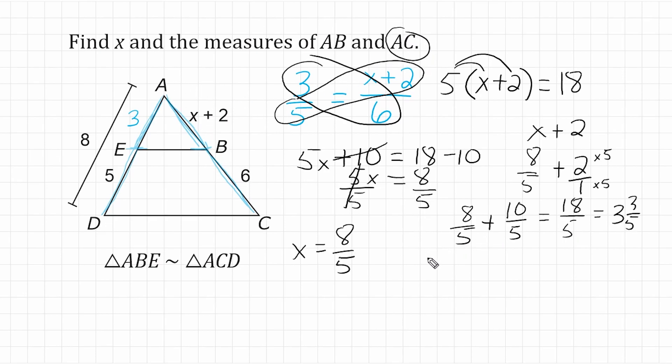So let's go ahead and take 3 and 3 fifths and add it to 6, which only requires us to add these whole numbers. So let's take 3 plus 6, which is equal to 9, and just slide our fractional part over. So the length of AC is equal to 9 and 3 fifths.